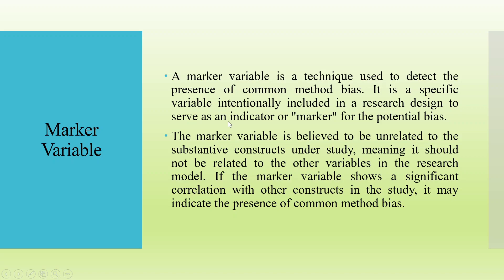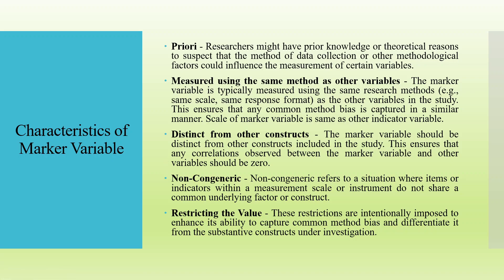Now, how do we detect whether common method bias is present in your model? For this, we will use a marker variable. A marker variable is a technique used to detect the presence of common method bias. It is a specific variable intentionally included in a research design to serve as an indicator for potential bias. The marker variable is believed to be unrelated to the substantive constructs under study. If the marker variable shows a significant correlation with other constructs, it may indicate the presence of common method bias.